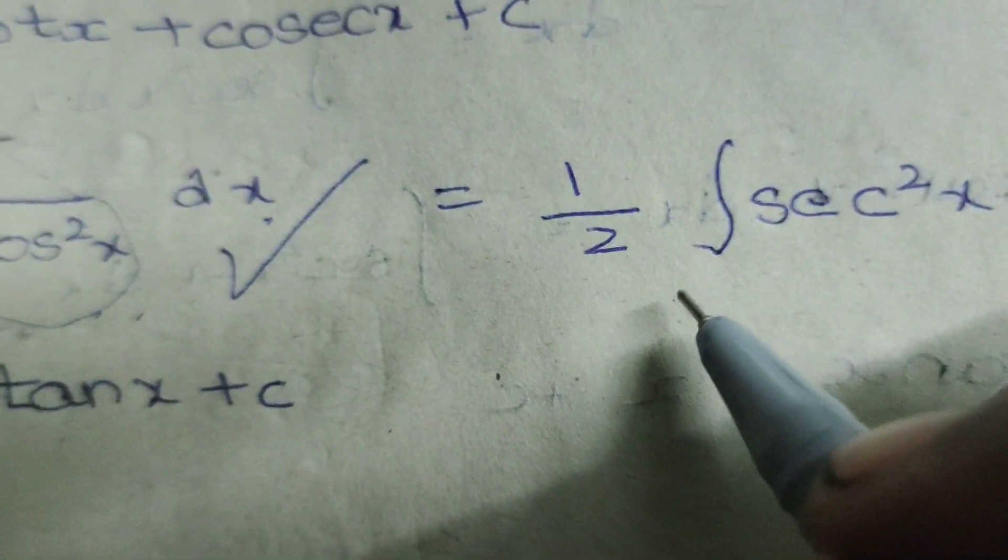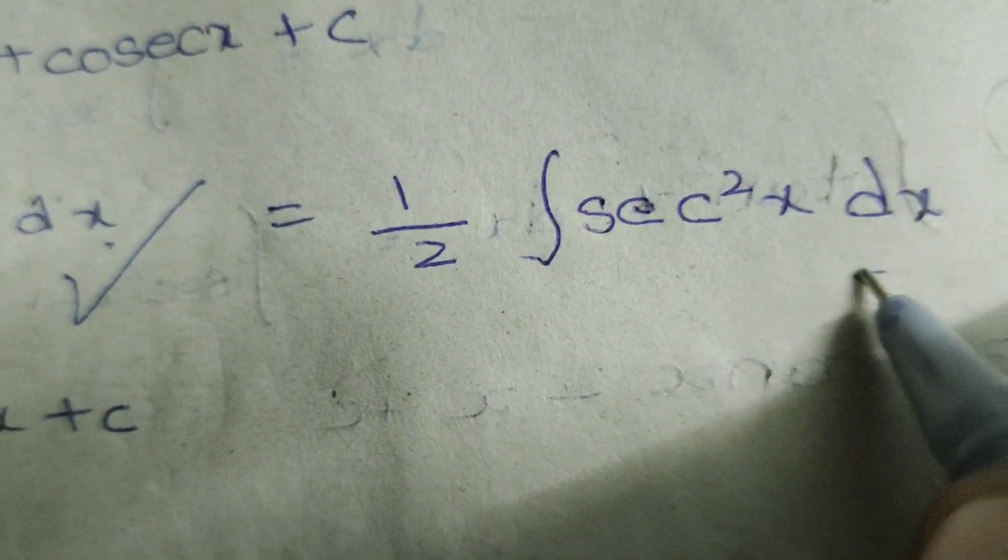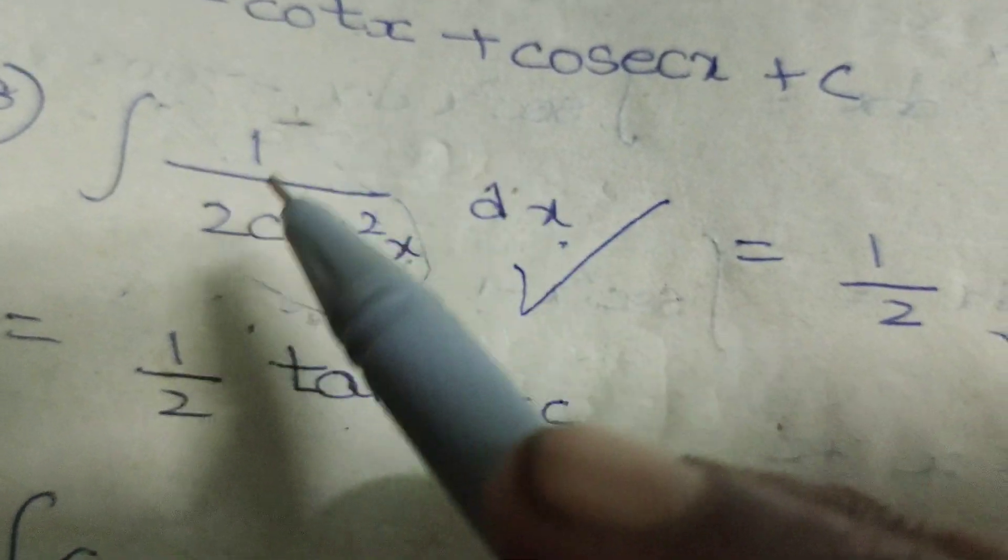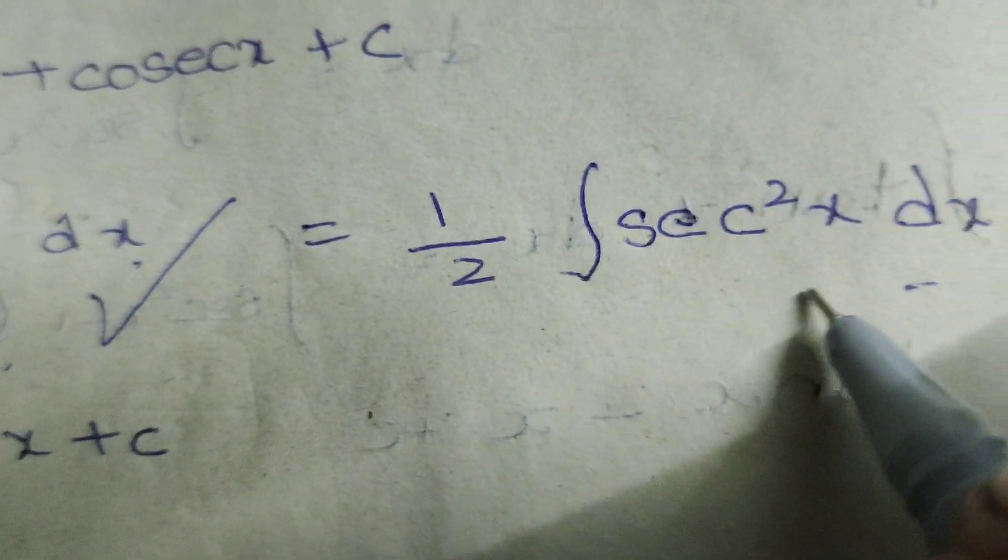So, write the formula. Here, 1 by 2 into integral of secant square x dx. 1 by 2 into integral of secant square x dx.